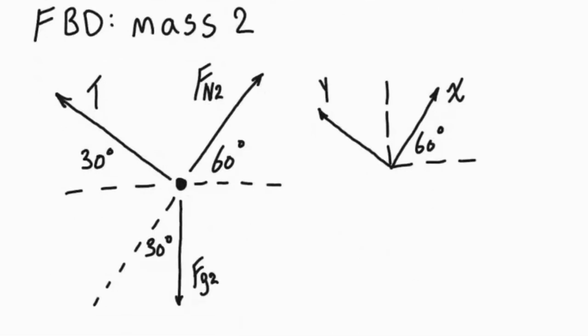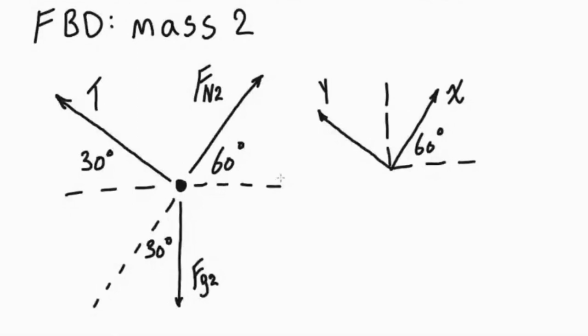Once we've got that, we can move on to mass number 2. So when we draw the free body diagram for mass number 2, now we've got the tension going up the ramp at 30 degrees, and then the normal force is perpendicular to that at 60 degrees.